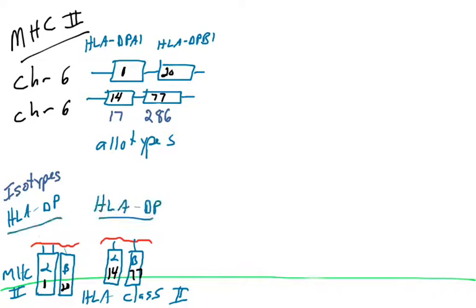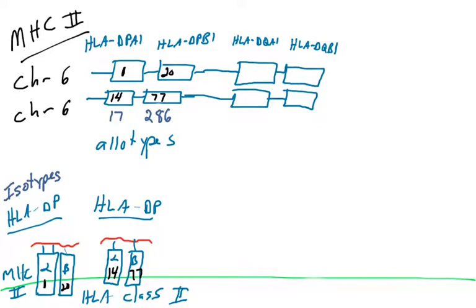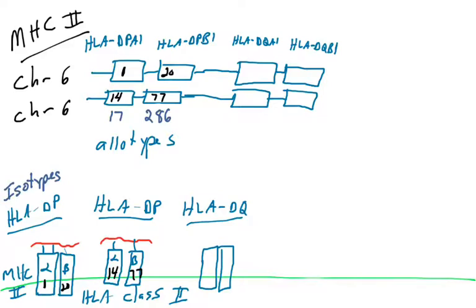So that's one set of genes coding for MHC class 2 complexes — the HLA-DP molecules, which present peptides to CD4-positive T cells. There are more genes. We have multiple gene families that accomplish the same function. There's another set called HLA-DQ genes: DQA1 and DQB1. They're on chromosome 6, you have two copies, and when expressed they produce the alpha chain and beta chain of an MHC class 2 molecule originating from the DQ genes — we call these the HLA-DQ isotypes.